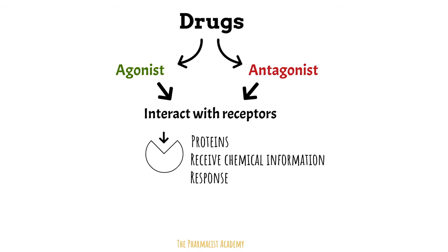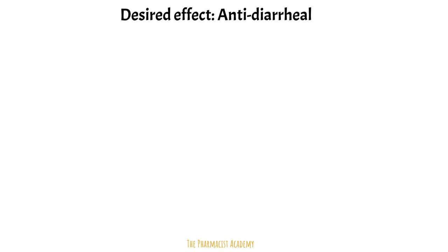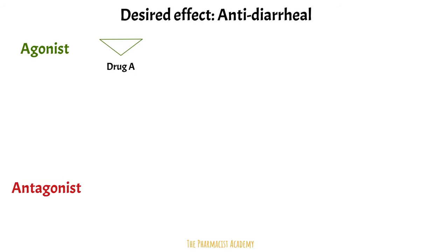Let's put everything together. Let's assume the desired effect we want is anti-diarrheal. This can be achieved with an agonist or antagonist. Remember, there are natural hormones, molecules, or substances in our bodies that are responsible for many things. In this case, we have Drug A, and let's assume it has been synthesized to look the same and act the same as a naturally occurring hormone in your body that normally slows GI motility.